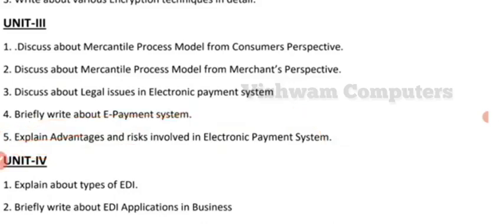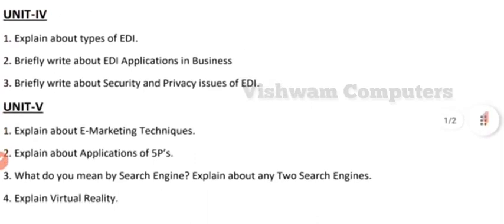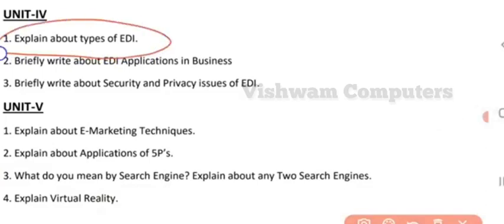The fourth unit consists of three more important questions. The first question is: explain about the types of EDI — Electronic Data Interchange. Different kinds of types will be there that you need to explain. You will also be having different standards. Types of EDI should be explained in this particular question.